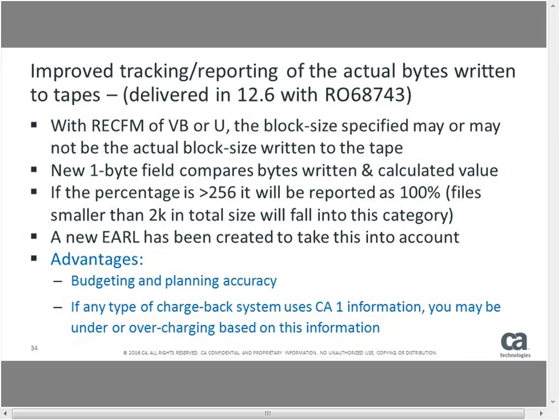We also delivered an enhancement to improve tracking of the number of bytes actually written to tape. If tape is being written with variable block or undefined block size, you don't really know how much data was written. Block count times block size isn't sufficient, so we're keeping a new one-byte field that allows us to determine block count times block size times an X-percentage, which tells us how much data was actually written. A new URL will report from this, and Vantage GMI will use this so that when reporting the number of gigabytes, it reflects the true number written at both the volume and file level.